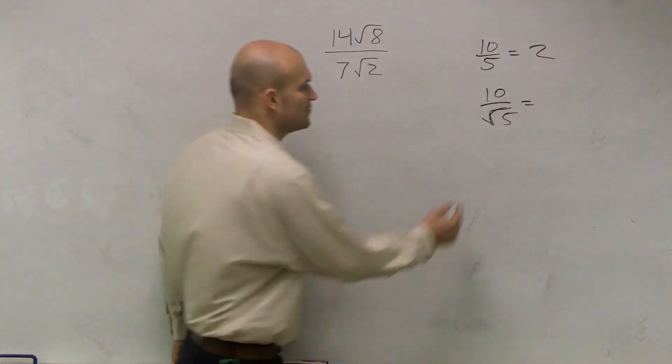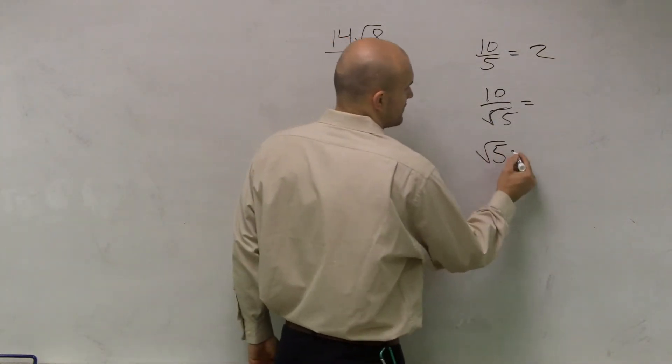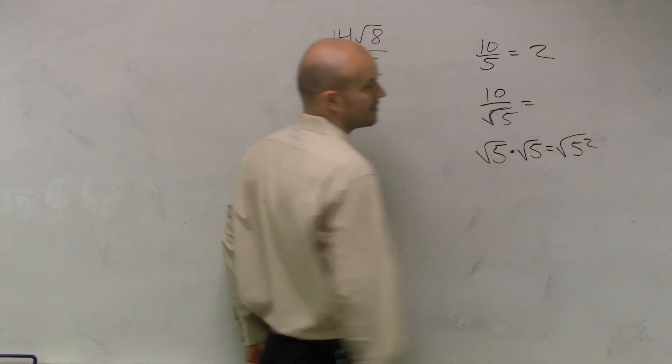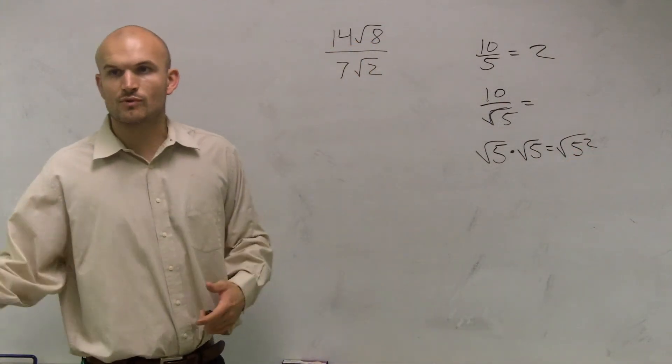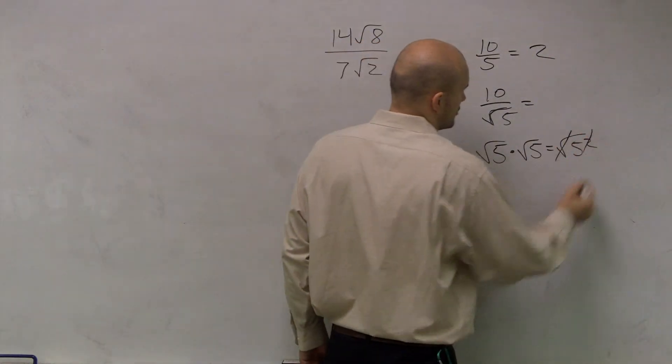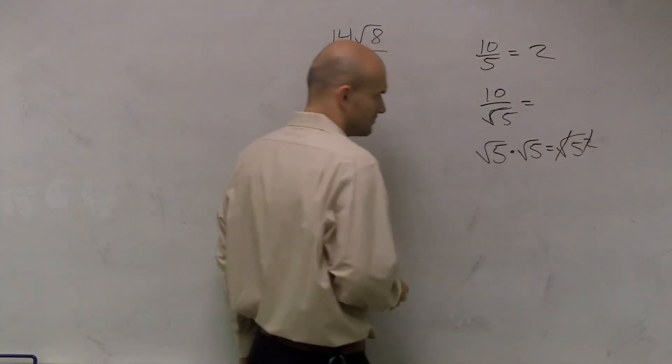So, to get rid of the square root of five, what I could do is, square root of five times square root of five equals the square root of five squared. Well, the square root and squaring are opposite operations, just like addition and subtraction. So, those can cancel out to equal five.